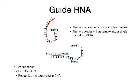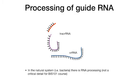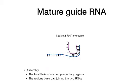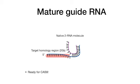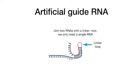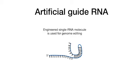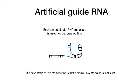The natural guide RNA is made of two separate RNAs. After one of the two RNAs is processed, the two base pair together through complementary regions to form the mature guide RNA. The highlighted single-stranded region is homologous to the DNA target. For use in biotechnology, a modified guide RNA is used — a linker loop is added to convert the two pieces into a single RNA strand.